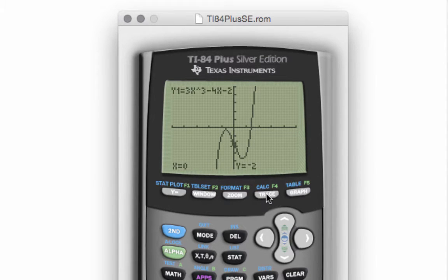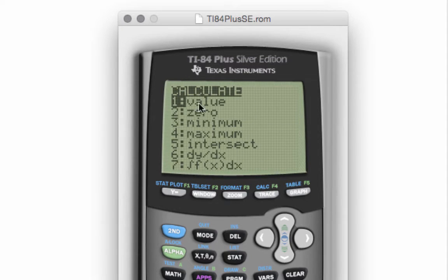Now one thing we could do is we could just hit our trace button and arrow back and forth and try to get close, try to approximate these values. And really that's all we are doing is approximating values. We can't find the actual values without some calculus ideas. There is a better way, I think, than just hitting the trace button. If we go second, trace, it'll bring up that calculate menu. And there are minimum and maximum options that we can pick.